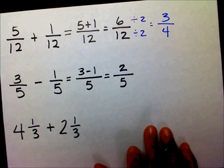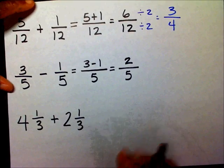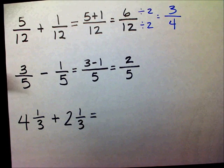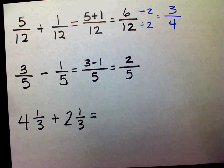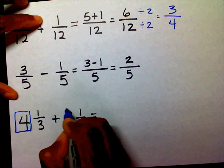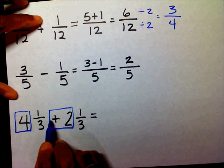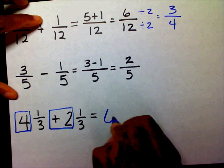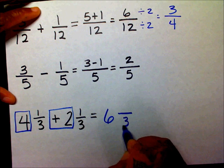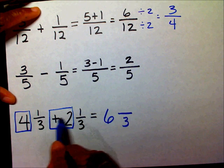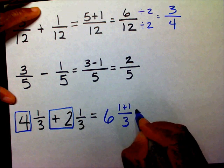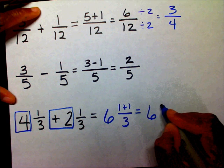And my last problem. First of all, you notice you have the same denominator. So if you have the same denominator, you're ready to add or subtract. So I have 4 plus 2, 4 plus 2 is 6. I have the same denominator. So I'm going to draw a line. I'm going to use that same denominator of 3. And 1 plus 1 in my numerator. So I have 6 and 2/3.